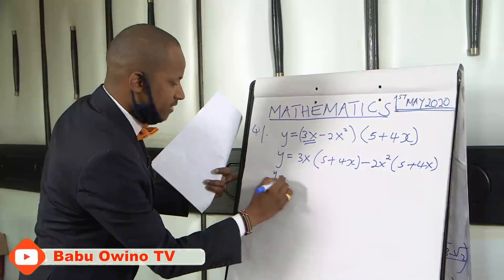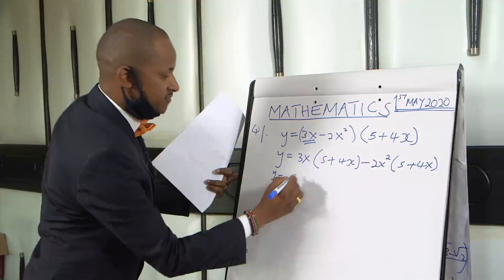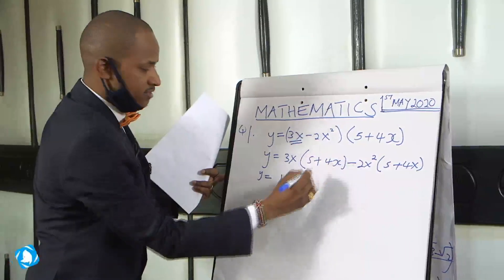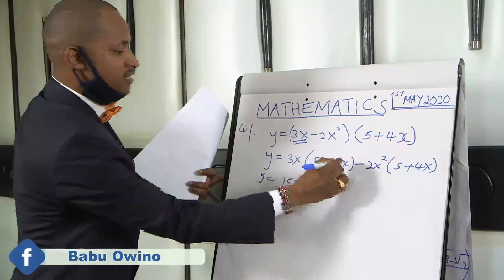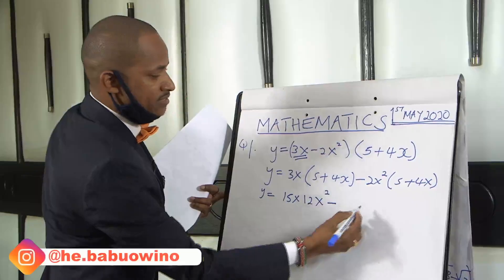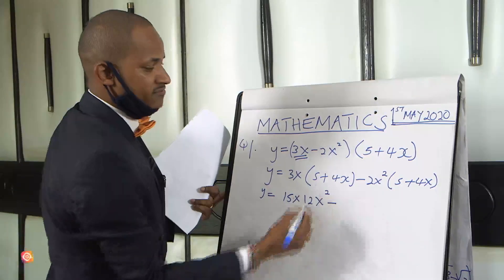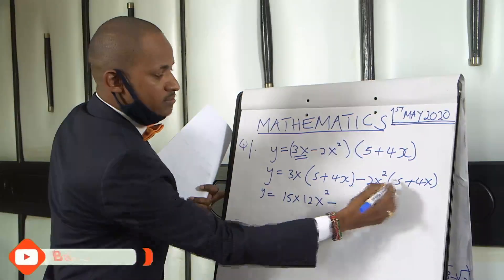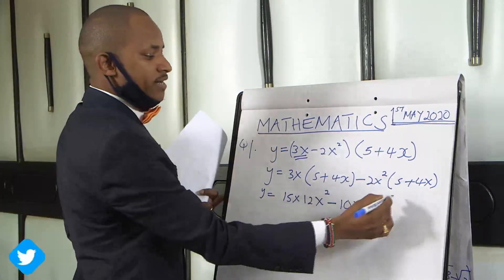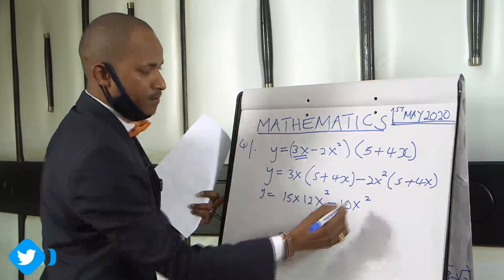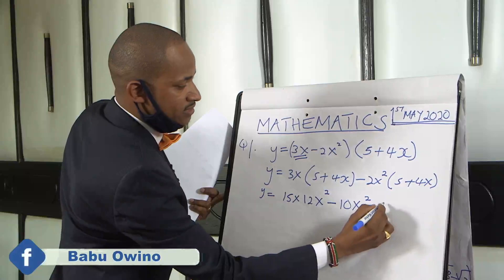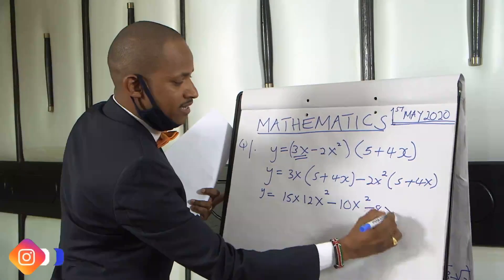Then we expand it. y equals 3x times 5 is 15x, 3x times 4x we get 12x squared — x times x is x squared, 3 times 4 is 12 — that's 12x squared, minus 2x squared times 5 is minus 10x squared. Then minus 2x squared times plus 4x: we get 2 times 4 is 8, that is minus 8, then x squared times x is x cubed.